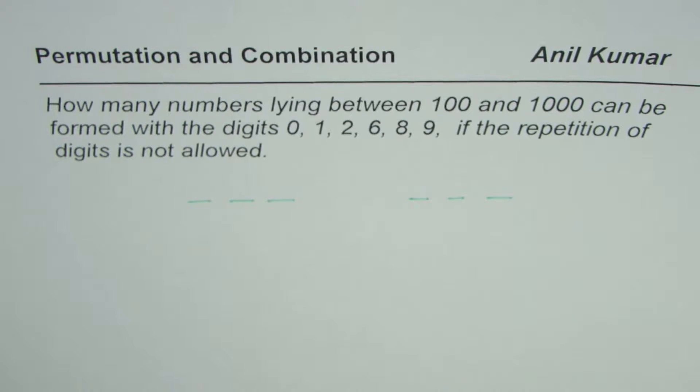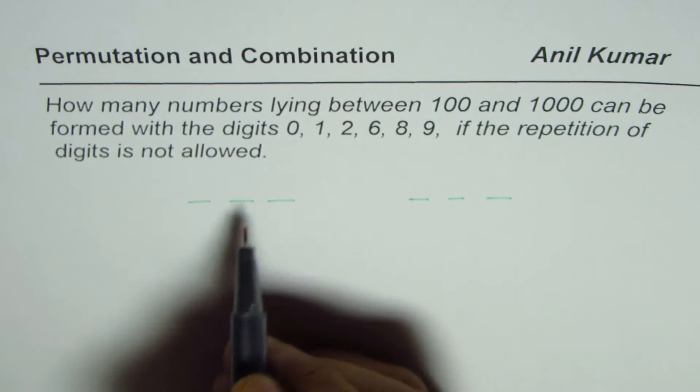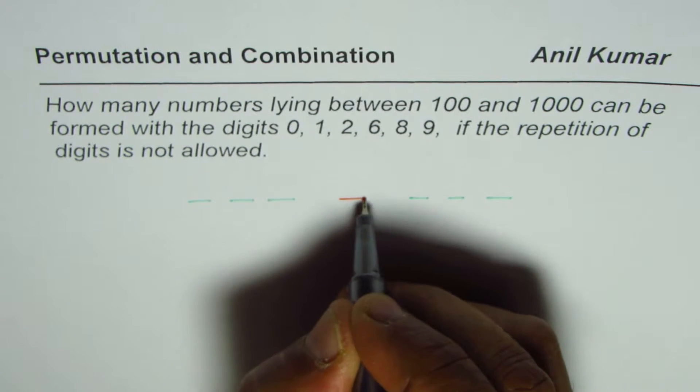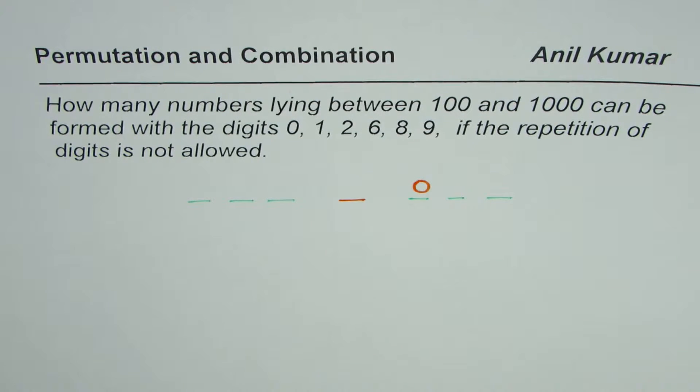So what we will do here is, we will find all the possibilities including 0, and then from those we will take away the ones where 0 is the starting point. So that is the whole idea. Now you can pause the video and answer the question.